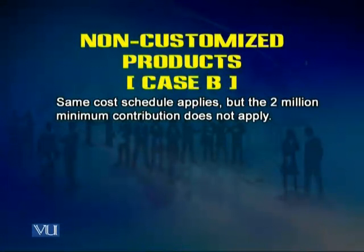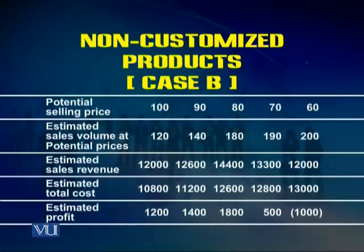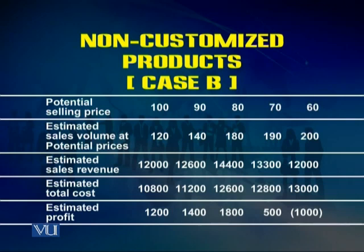In Case B, the same cost schedule applies but the 2 million minimum profit requirement does not apply. We are not required to have a margin of 2 million. Estimates of sales demand at different selling prices have been made based on market research. At a potential price of 120, the estimated sales volume is 100,000 and estimated sales revenue is 12,000. The estimated total cost is 10,800 and estimated profit is 1,200. When we look at a price of 90, the estimated sales volume would be 140,000, with potential sales revenue of 12,600 and estimated total cost of 11,200, giving an estimated profit of 1,500.